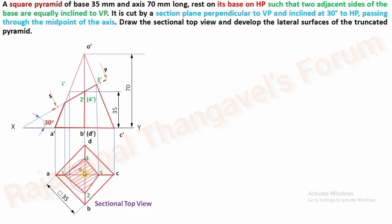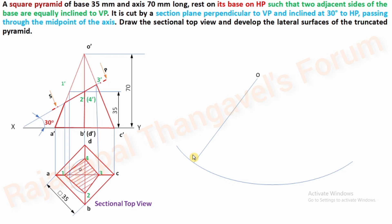In case none of the slant edges are parallel to XY, we would have to make one of them parallel to XY — we discussed such a problem in the hexagonal pyramid development, which you can check later. Since OA and OC are parallel to XY, take any point in space; the radius is the distance O'C' or O'A'. Measure O'A' or O'C' as radius and draw an arc. Fix any point on the arc and connect it as slant edge OA — this is the true length of the slant edge.